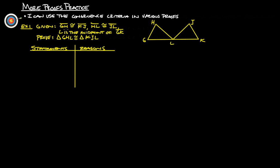First example: given GH is congruent to KJ segment. So let's mark that down — GH congruent to KJ. Also, HL is congruent to JL. And L is also the midpoint of GK. Since L is the midpoint, it's going to cut GK exactly in half, so this segment is going to be the same as that.